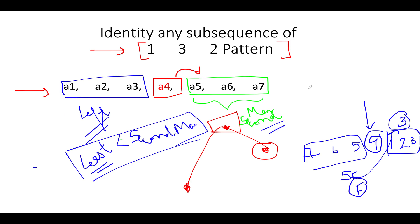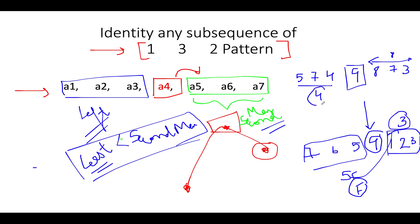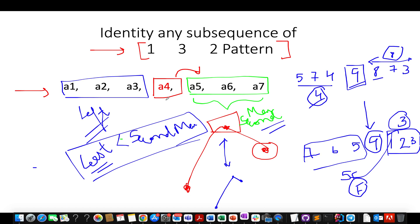Now a happy case. The input array is [5, 7, 4, 9, 8, 7, 3]. The maximum value is 9. The second max towards the right of 9 — out of 8, 7, and 3 — is 8. The least value towards the left of 9 is 4. When we compare, 4 is less than 8, which satisfies the condition. We have identified the 132 pattern. The three numbers are 4, 9, and 8. If you plot 4, 9, and 8 on a sheet of paper, the graphical structure of the 132 pattern is formed.